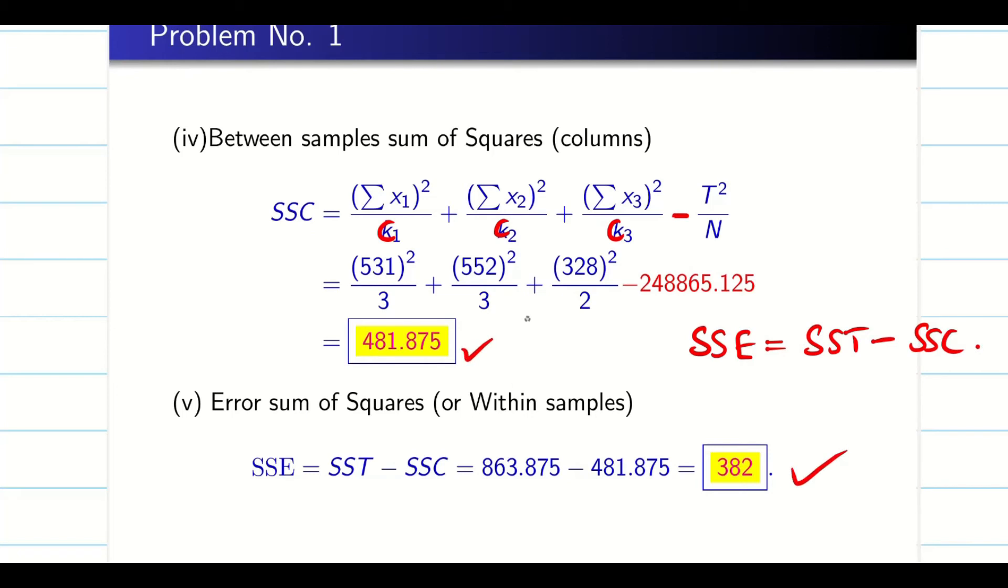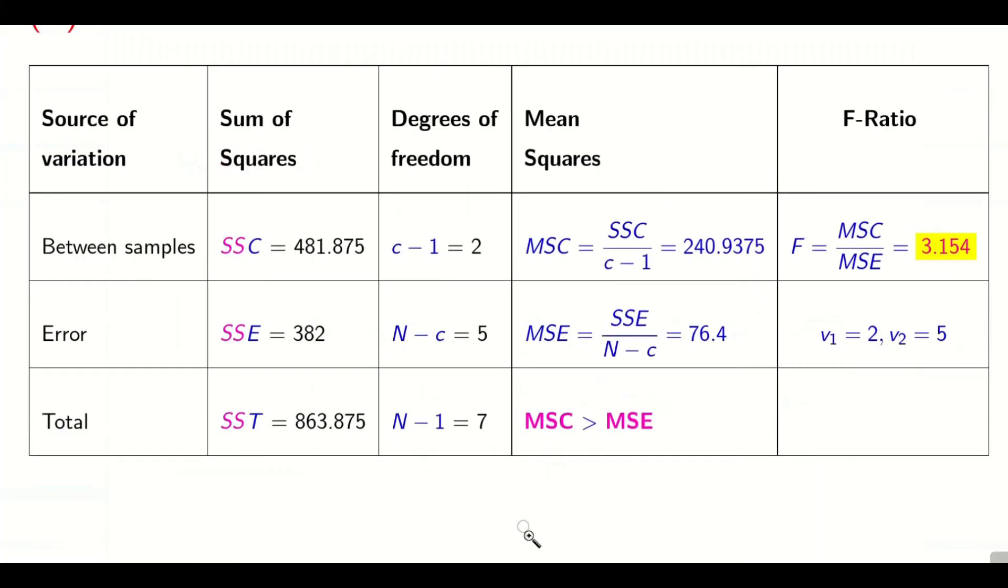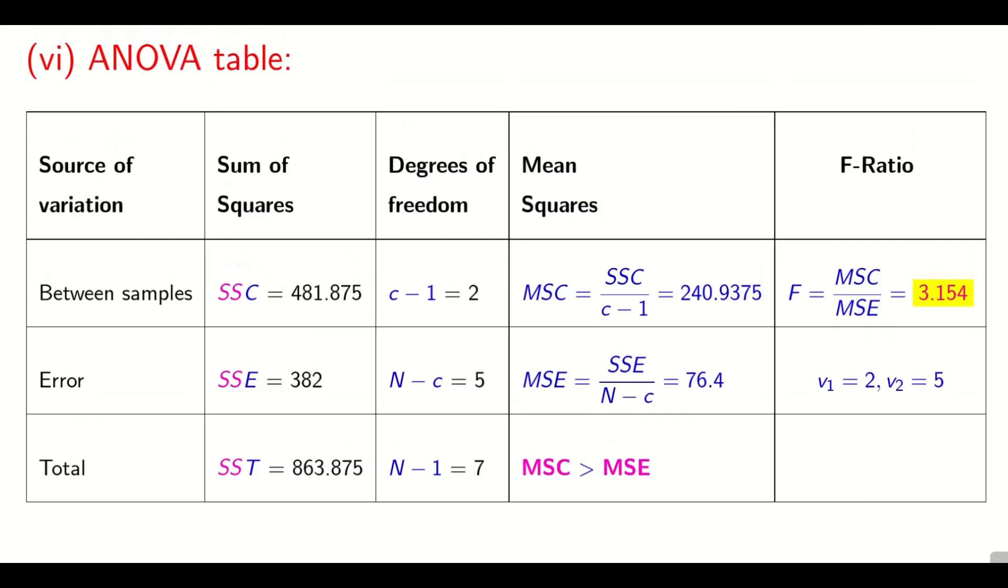Now our job is to form the table. As I said initially, we have to form the table like this. First it is source of variation. Where we get the source? Between columns or between sample, error, total. And sum of squares, the code is C, E, T: SSC, SSE, SST. You write it. Degree of freedom is going to be c - 1 for SSC, N - c for error, and total N - 1. So now the degree of freedom, three columns we have. So c - 1 is 2. N is going to be 8. 8 - 3 is going to be 5. And this is 8 - 1, that is going to be 7. This is over.